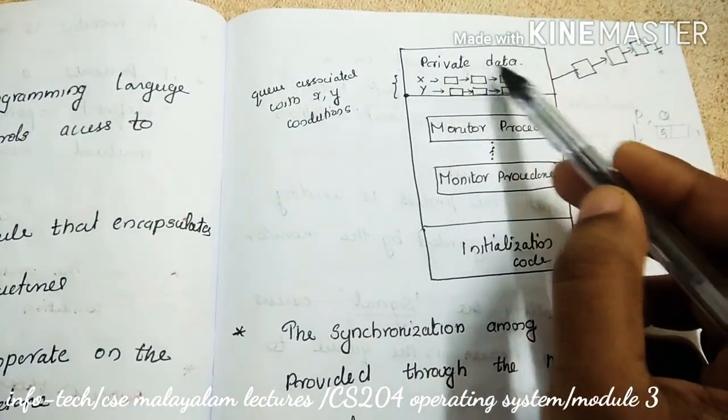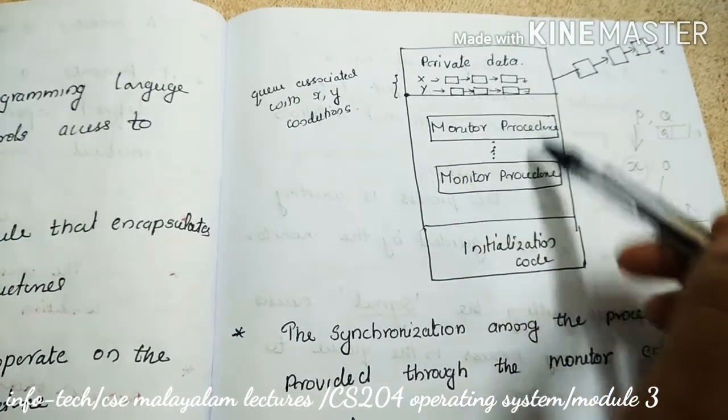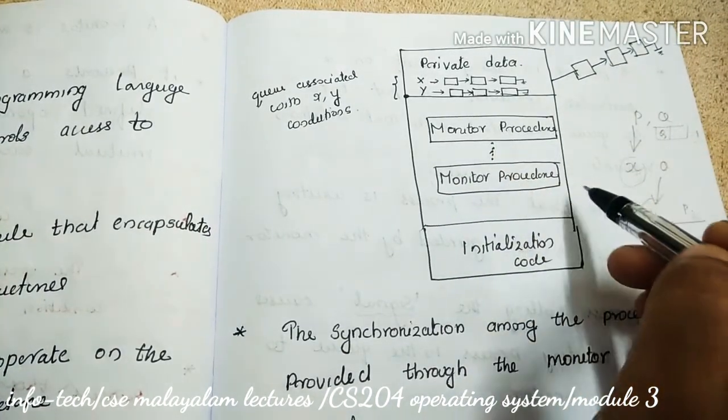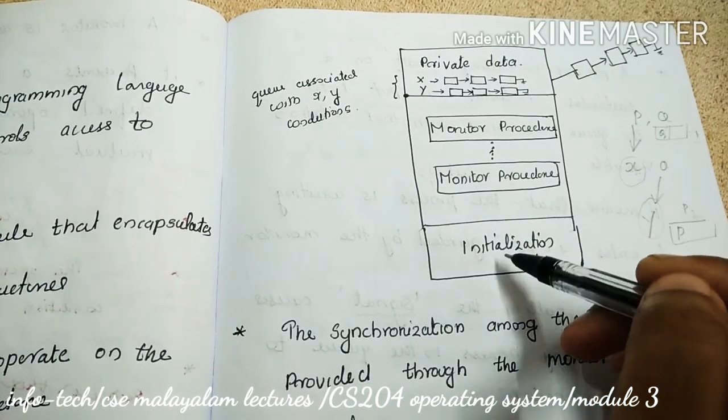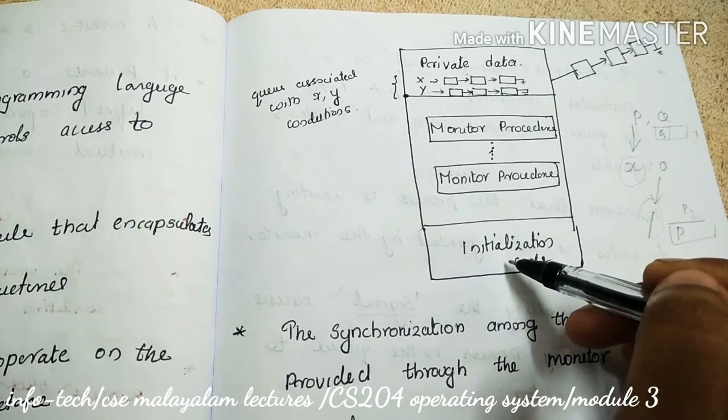In the top portion, the shared data. The most important procedures will be used in the procedures. So for example, procedure P1, P2, up to Pn. Last portion is the initialization code, and the initialization code in this portion will be declared.